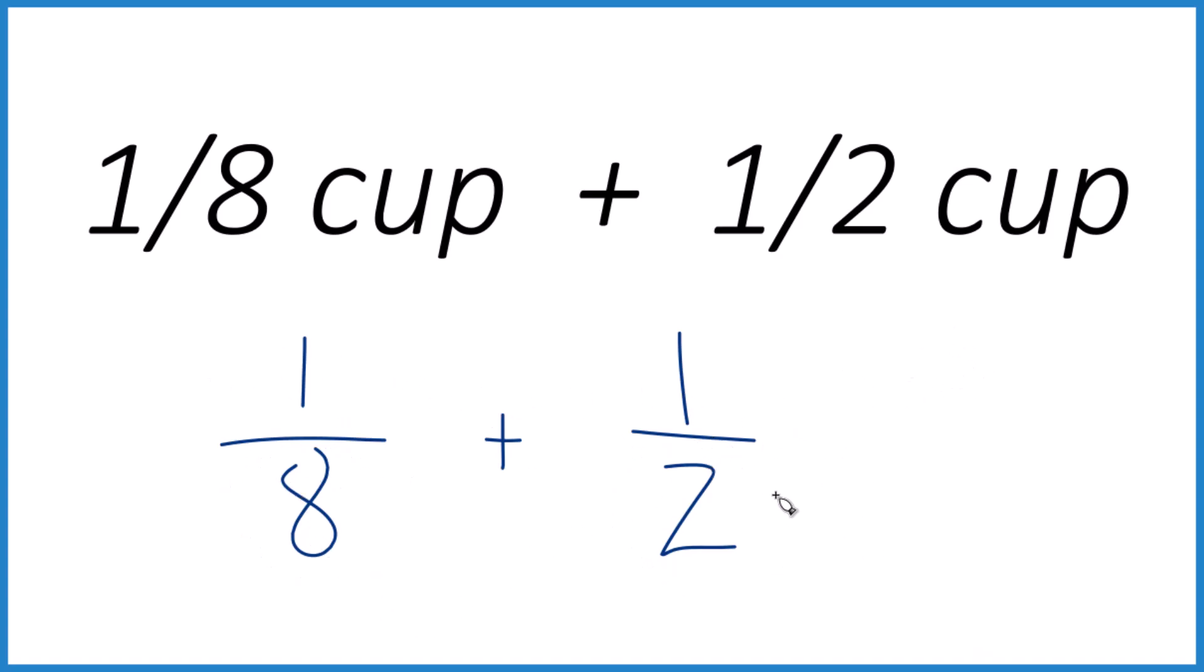So why don't we do this? Why don't we say 2 times 4? That would give us 8. We already have 8 over here, but we also need to multiply the numerator by 4 as well. That's because 4 over 4 is 1. So we haven't changed the value, just the way it's written.